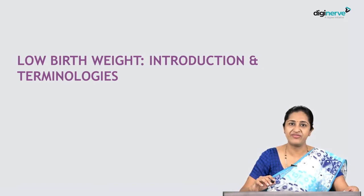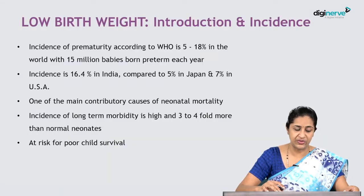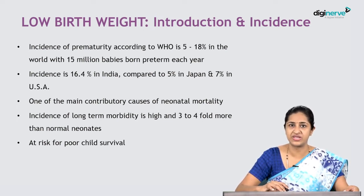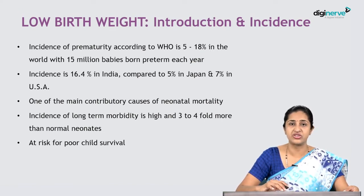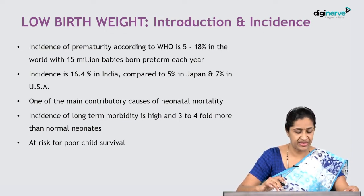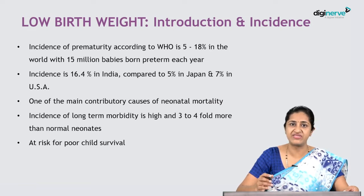The incidence of prematurity according to WHO is 5 to 18 percent in the world, with 15 million babies born preterm each year — statistics from 2019. The incidence in India is 16.4 percent, compared to 5 percent in Japan and 7 percent in the United States. One of the main contributory causes of neonatal mortality is the low birth weight population, and the incidence of long-term morbidity is three to four times higher than in normal neonates.